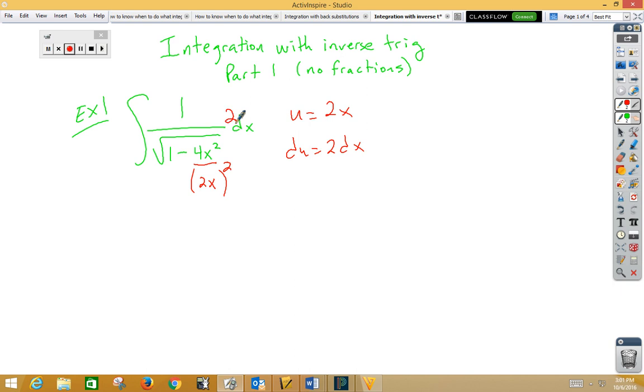If I want to put a 2 there, I need a 1 half out in front. I have 1 half integral, 1 over root, 1 minus u squared, du. That's going to be inverse sine, so I have 1 half inverse sine of 2x plus c.